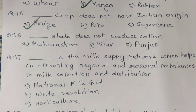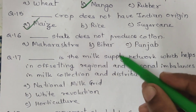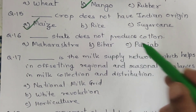Question 16. Which state does not produce cotton? Options are A. Maharashtra. B. Bihar. C. Punjab. And the correct option is B. Bihar.